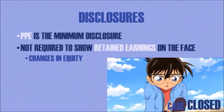As for disclosures, PPE is the minimum disclosure and you should add more detail in the footnotes. Provision is a type of liability that is not required to show retained earnings on the face of the accounting statements, but it will show up in the changes of equity. In our next lecture we'll be discussing merchandising operations.